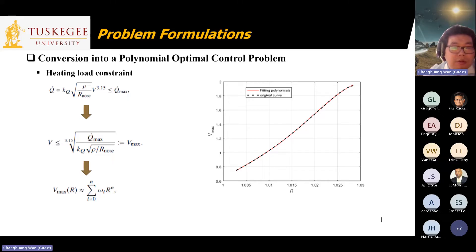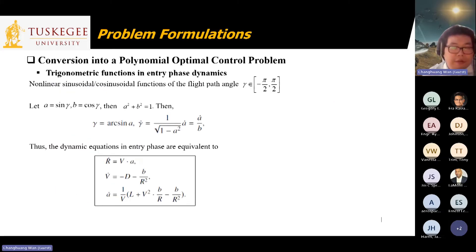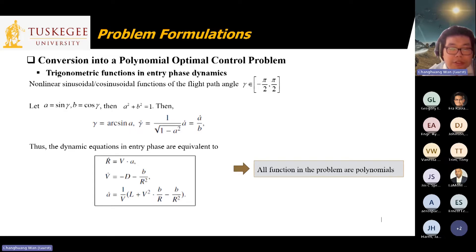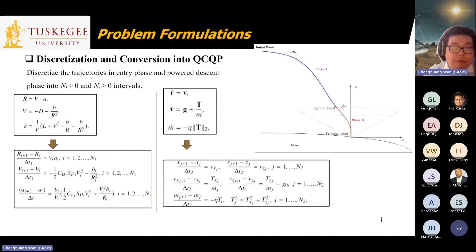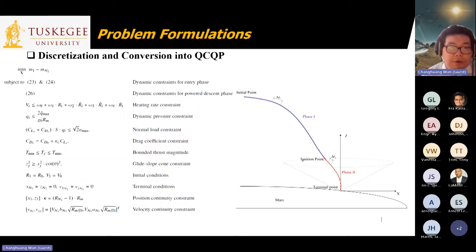For the heating load bound, which is also a non-polynomial function, we use approximations to equivalently rewrite the heating load constraint in terms of velocity. For the sine and cosine terms, we equivalently transfer them to polynomial functions as well. With all functions in the problem now expressed as polynomials, we apply discretization to transfer everything into quadratic functions, yielding the final QCQP formulation for the fuel-optimal control problem.